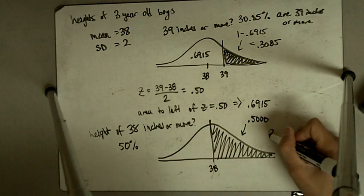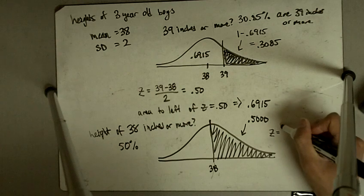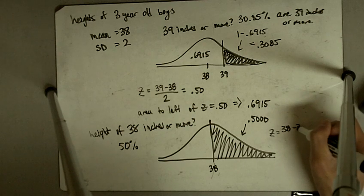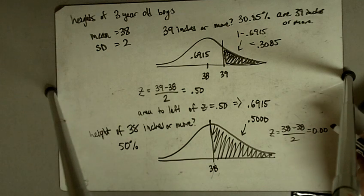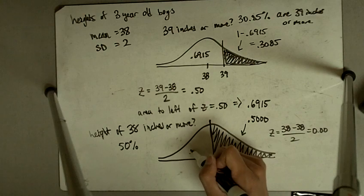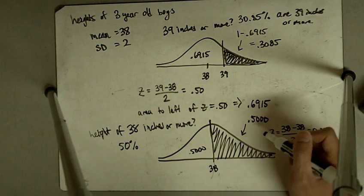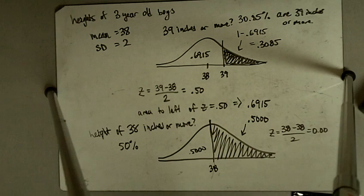If you aren't convinced, you can look up the z-score. The z-score is going to be 38 minus 38, divided by 2, you get a z-score of 0.00. If you look up 0.00 in the table, you'll see that the area to the left is 0.500, which means the area to the right is also 0.500.